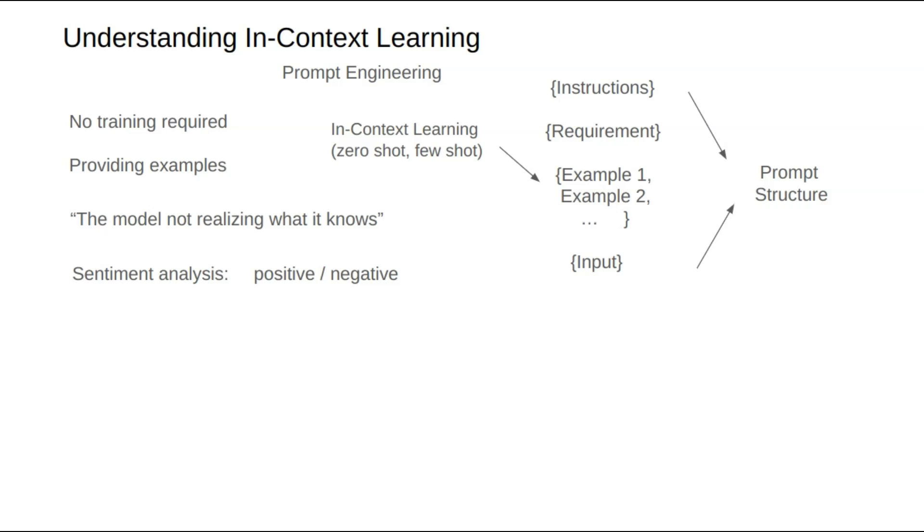A few points to note about in-context learning. First, limit the number of examples. Too many examples can occupy the prompt's context window. Processing long prompts often leads to suboptimal results. It increases inference costs. Smaller models might not even have the capacity to handle lengthy prompts.